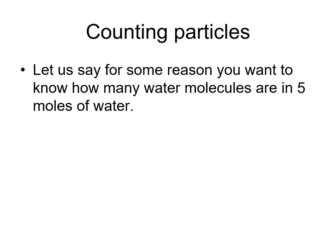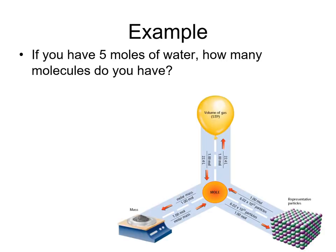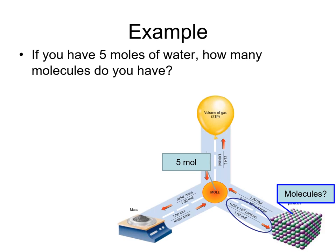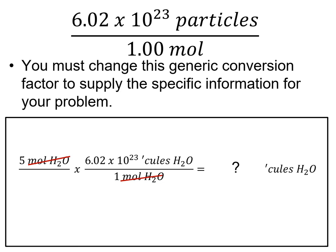Let's do another problem. How many water molecules are in five moles of water? We're given five moles of water on the left; we want molecules of water on the right. Looking at the mole roadmap, we're starting at moles and going to particles, so the conversion factor is Avogadro's number of particles over 1 mole. Supplying the specifics: Avogadro's number of water molecules in the numerator, 1 mole of water in the denominator. The moles of water cancel, leaving 5 times Avogadro's number, which is 3.01 times 10 to the 24th molecules of water.